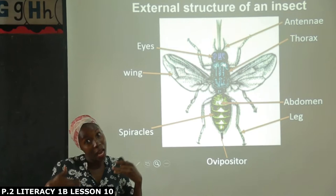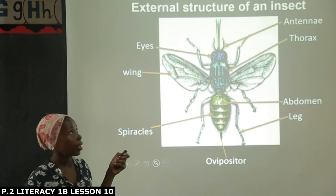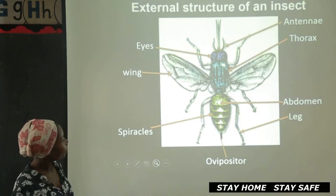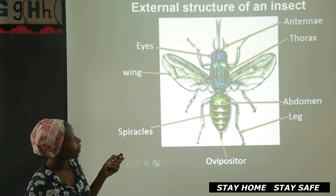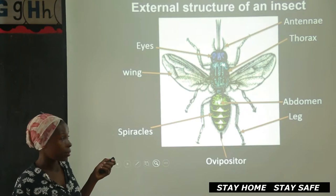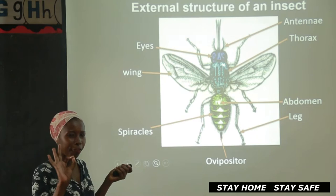We are looking at outside parts. The word external means outside. So we are looking at the external structure or the external parts of an insect. When you look at this insect, it has eyes — sometimes we call them compound eyes. It has the compound eyes, it has the antenna, it has that middle part called the thorax, it has the wings, it has the spiracles. The spiracles are found on the abdomen and are very tiny holes used for breathing.